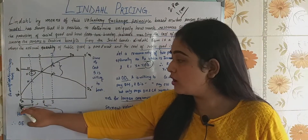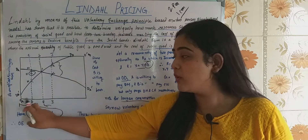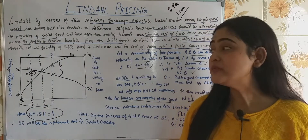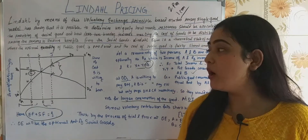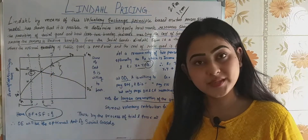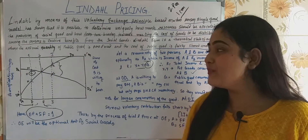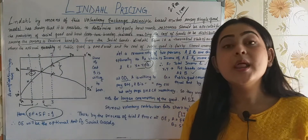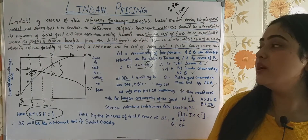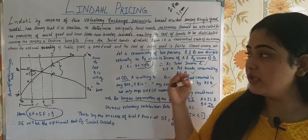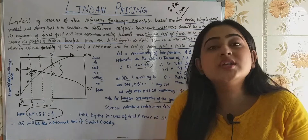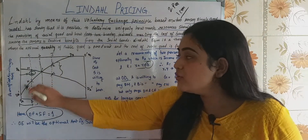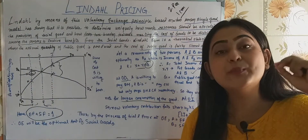Suppose the desired quantity is OAD. For that quantity, A is willing to pay DM and B is willing to pay CN. Now what they actually have to pay is AH. So you can see the willingness to pay is more than what they actually have to pay.